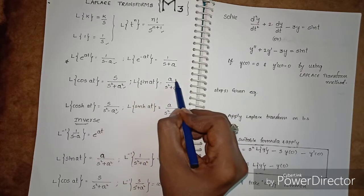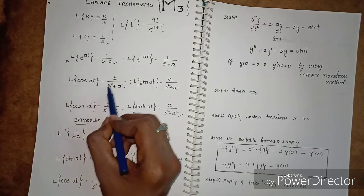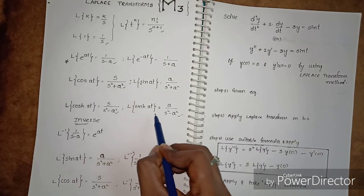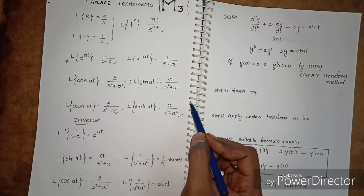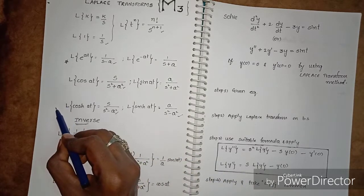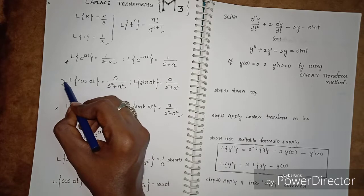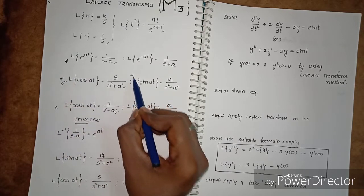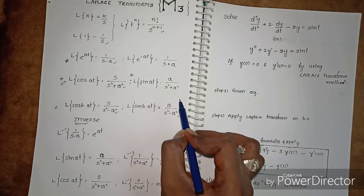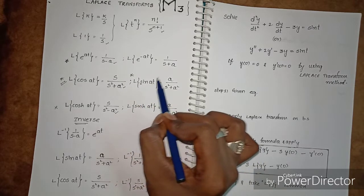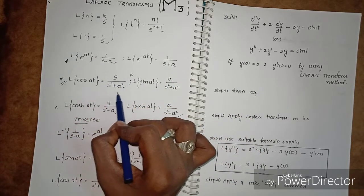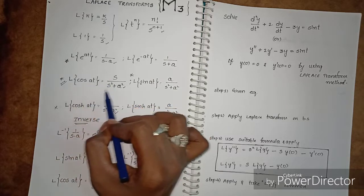L of sin(at) equals a by s squared plus a squared. L of cos(at) equals s by s squared plus a squared. For hyperbolic functions: L of sinh(at) equals a by s squared minus a squared. L of cosh(at) equals s by s squared minus a squared. Note the difference — plus becomes minus for hyperbolic functions.